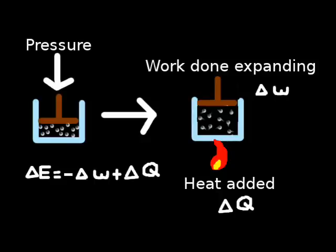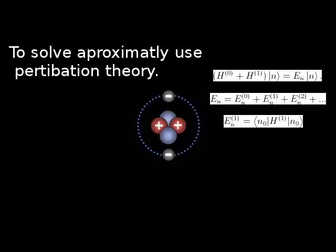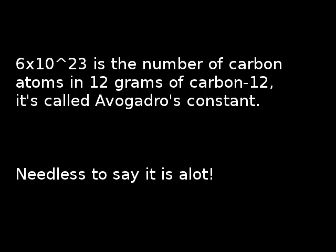However, even the slightest complication makes the system analytically unsolvable. Even two electrons going around a proton has no known solution, so approximation methods are used, such as perturbation theory. With this in mind, how then do we model the ridiculously large number of particles found in any real system? For example, 18 milliliters of water has 6 times 10 to the 23 water molecules, an impossible system to solve from its equations of motion.